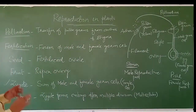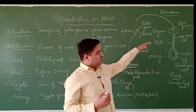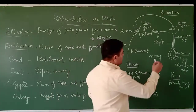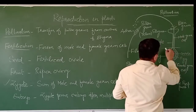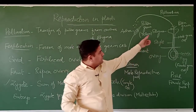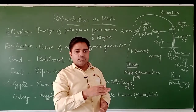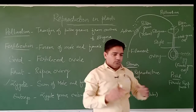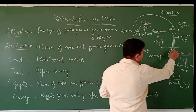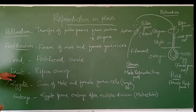Now the question arises: what is the fruit? This is the flower, and after fertilization, the flower converts into a fruit. After fertilization, the stigma and style region shed off — they separate from the ovary. The ovary then becomes mature and ripens. The ripened ovary is known as the fruit.